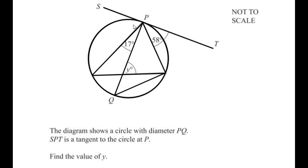Here in the diagram, we can see that a circle is given with the diameter PQ and a tangent ST is joining the circle at point P. We need to find out the value of angle y. Before we begin solving this, let us understand the circle theorems which we are going to use here.